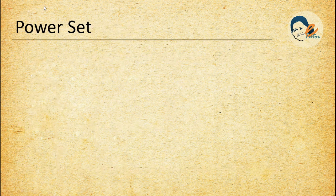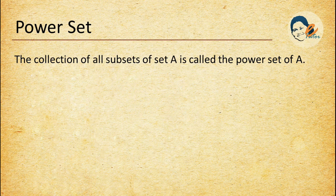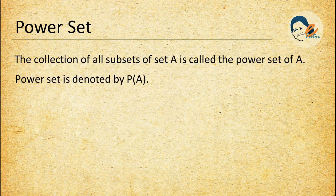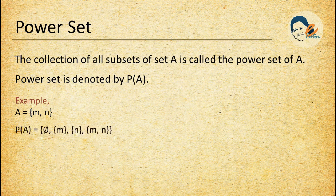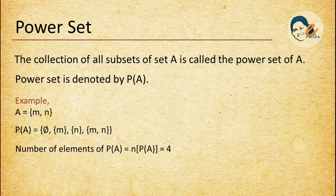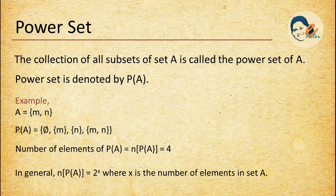Power set: the collection of all subsets of set A is called the power set of A, denoted by P(A). Example: if A has elements {m, n}, then the power set P(A) contains those subsets, and the number of elements of P(A) is 4. In general, the number of elements in the power set P(A) equals 2 to the power x, where x is the number of elements in set A.